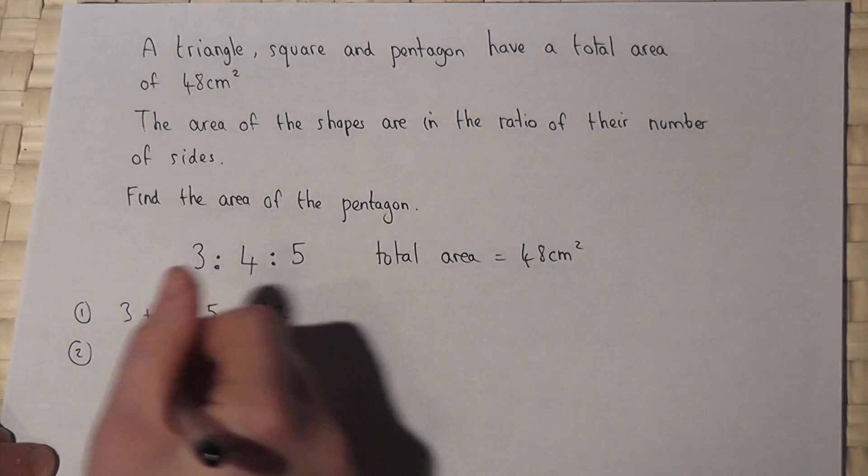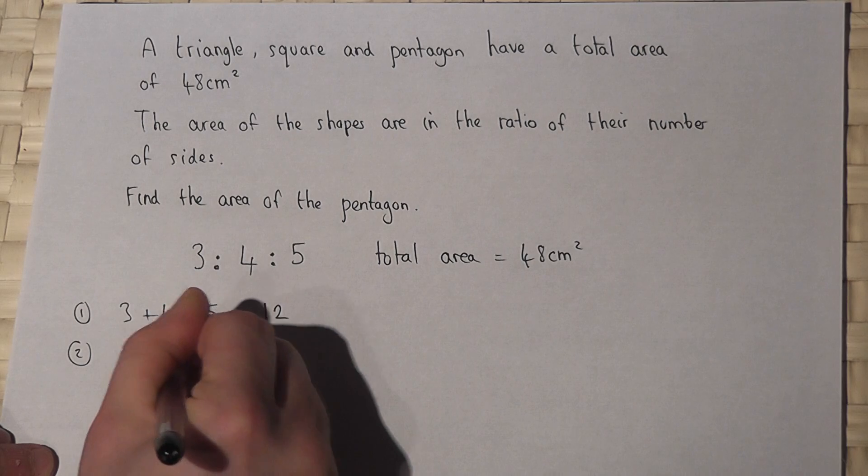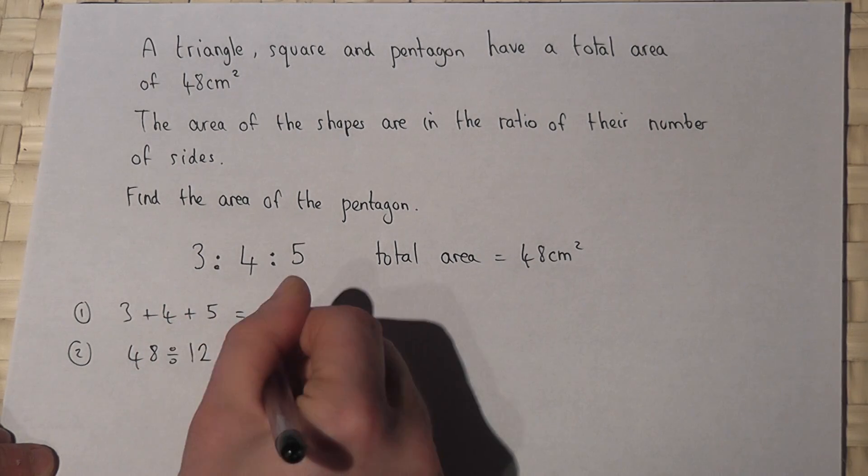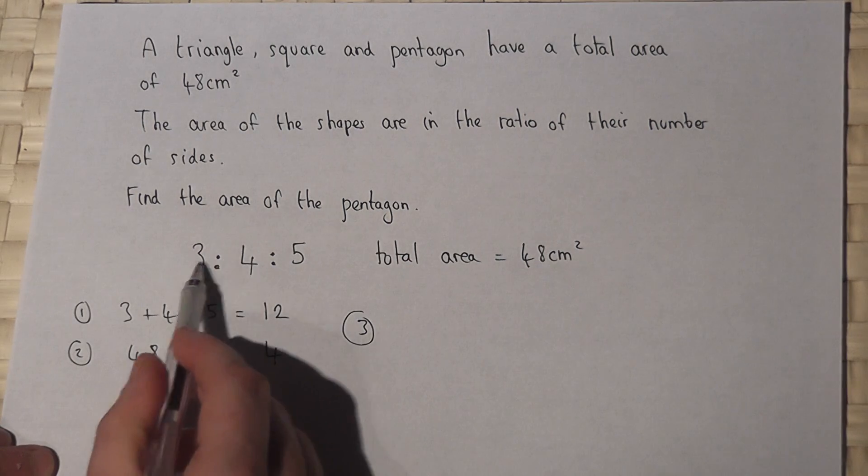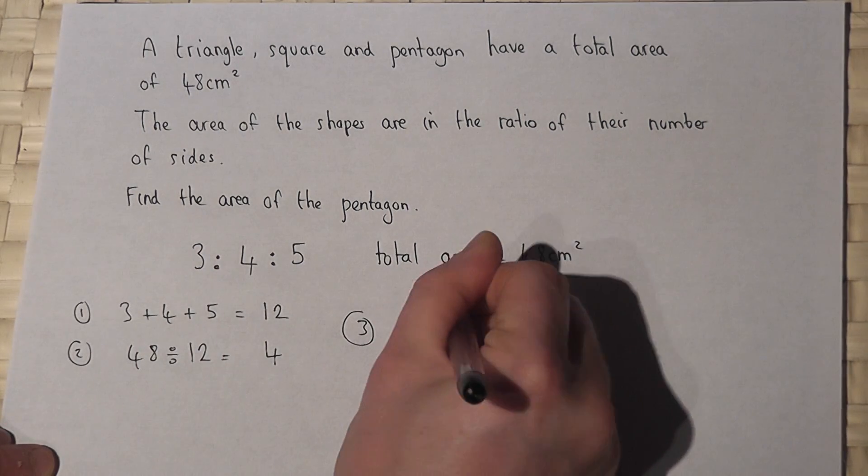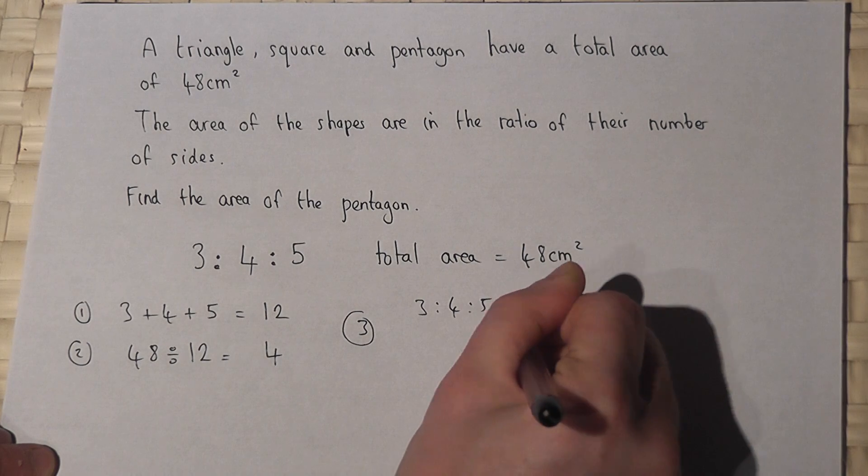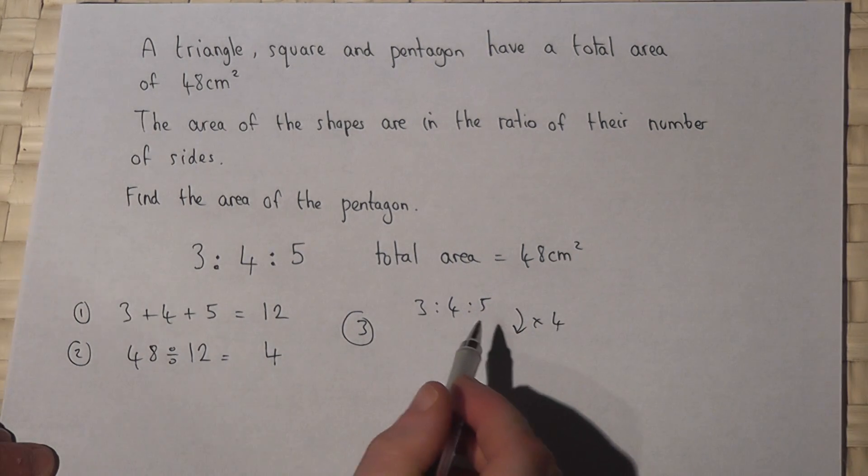If I then divide the total area by 12, I get 4. So step through. If I then times the ratio by this number 4, so I times each of the parts by 4,